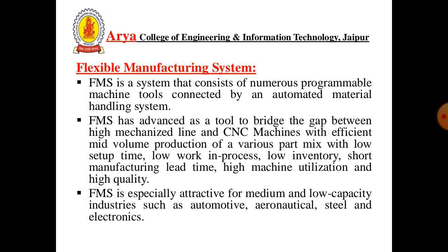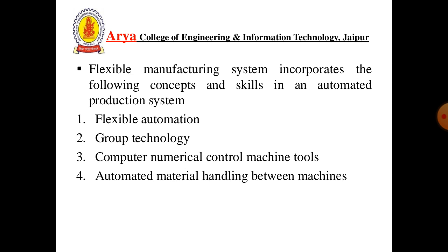Flexible Manufacturing is a theory which permits the production system to perform under a highly modified production rate. FMS is especially attractive for medium and low capacity industries such as automotive, aeronautical, steel, and electronics industries. Flexible Manufacturing System incorporates the following concepts in an automated production system: Flexible Automation, Group Technology (discussed in Unit 3), Computer Numerical Control Machine Tools (discussed in Unit 2), and Automated Material Handling Between Machines (discussed in Unit 4).